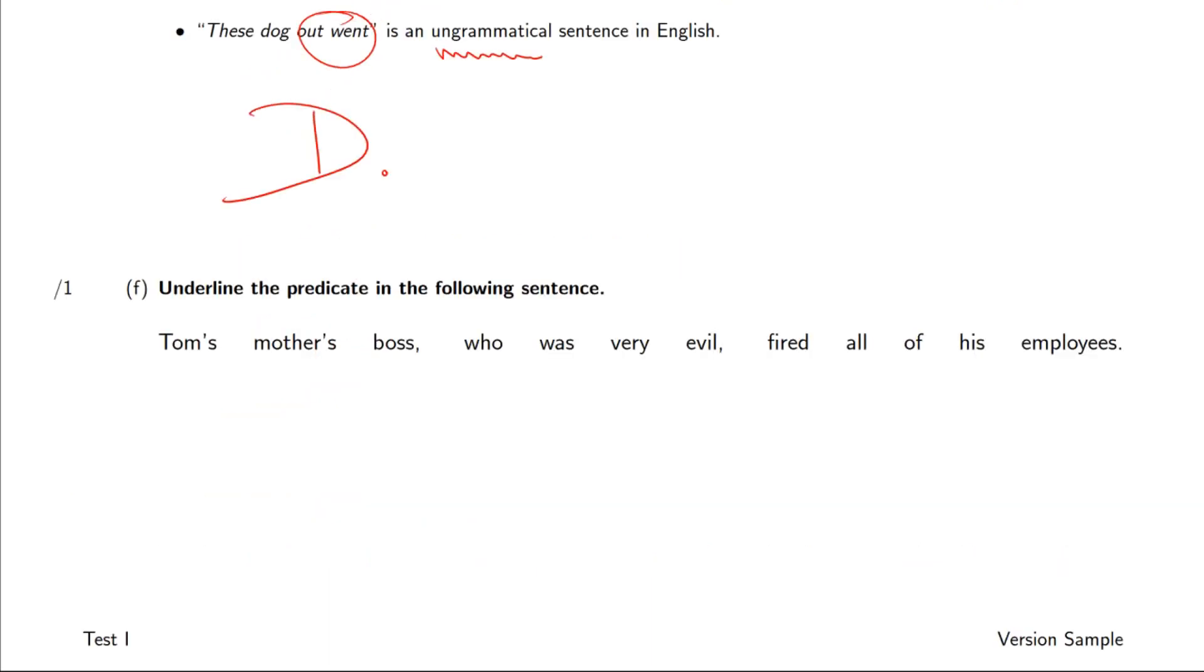And finally, the last question, underline the predicate in the following sentence, Tom's mother's boss who was very evil fired all of his employees. So this is all, this is the action of the sentence fired all of his employees and the subject would be Tom's mother's boss who was very evil. Tom's mother's boss of course is the actual person we're talking about, but who was very evil is describing Tom's mother's boss and therefore part of the subject.